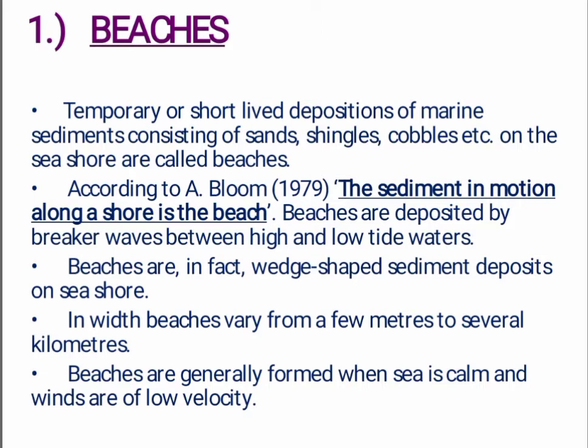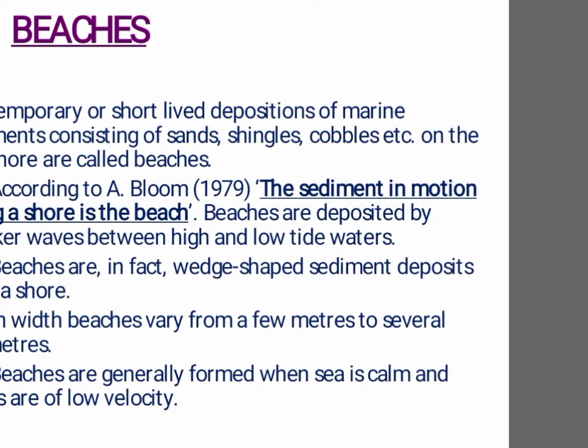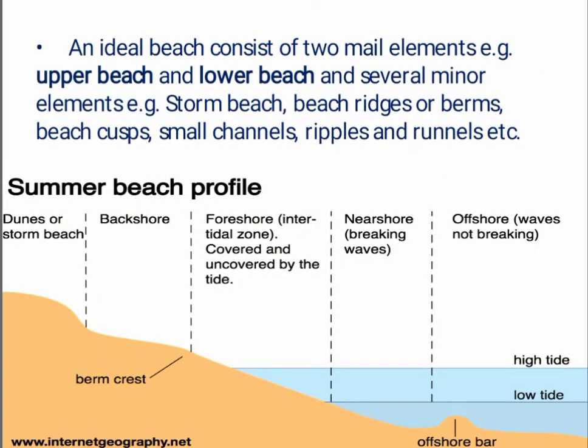Beaches are generally formed when sea is calm and winds are of low velocity. An ideal beach consists of two main elements — upper beach and lower beach — and several minor elements: storm beach, beach ridges or bumps, beach cusps, small channels, ripples and runnels, etc.